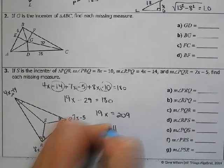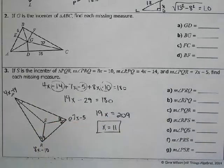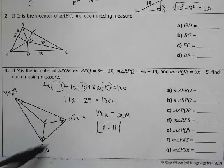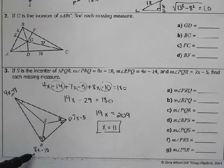So the measure of angle PRQ, we're going to do 11 times 8 minus 10. So 88 minus 10. PRQ, 78 degrees.